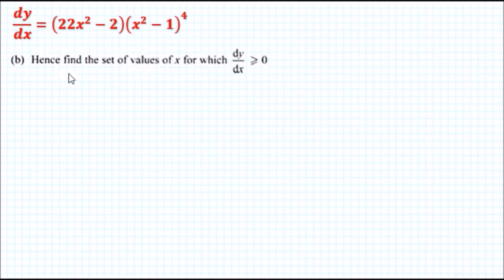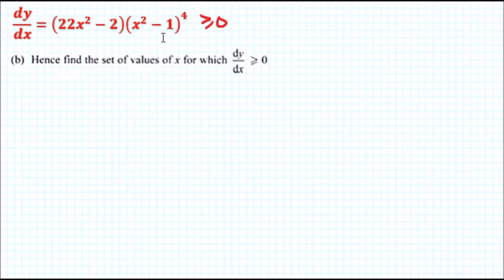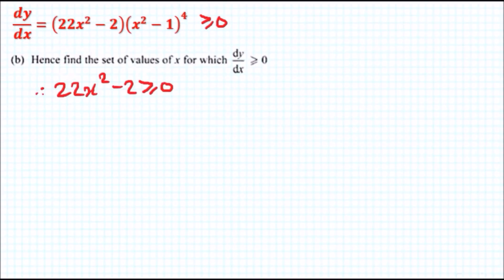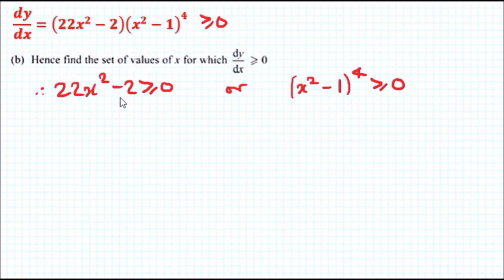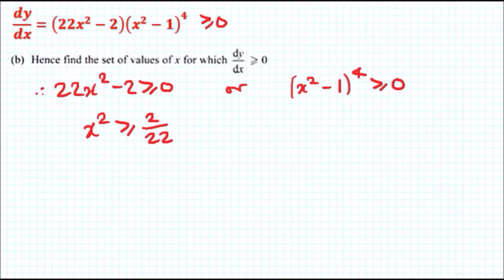Let's have a look at part b now. Keeping the derivative, we need to find the set of values of x for which the derivative is greater than or equal to zero. We can split this into two parts: firstly, 22x² - 2 ≥ 0, and the second factor (x² - 1)⁴ ≥ 0.